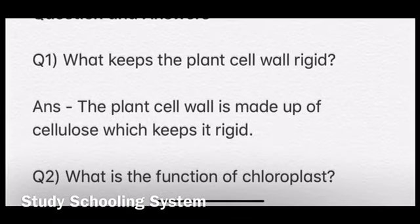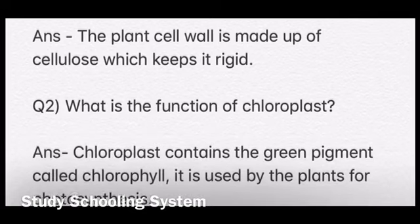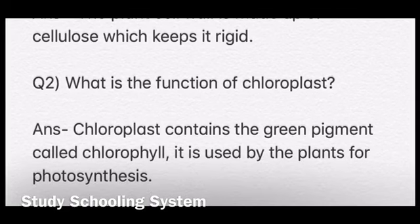Your second question is: what is the function of chloroplast? Chloroplast is found in plant cells and contains a green pigment called chlorophyll. Chloroplast contains chlorophyll, which is used by the plants for photosynthesis — photosynthesis is the process by which plants make their own food.